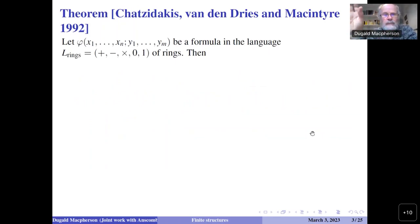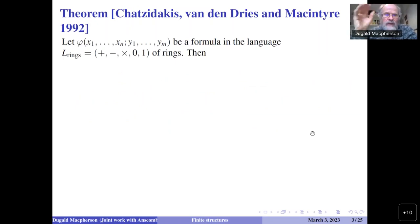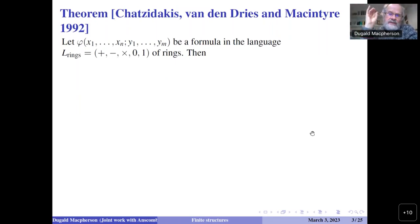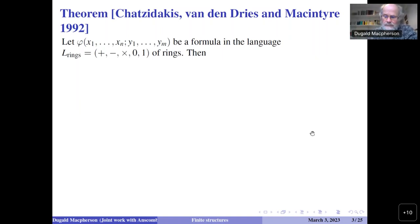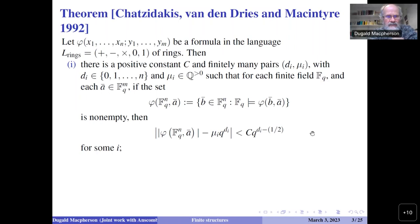The theorem of Chatzidakis, van den Dries, and MacIntyre looks at definable sets in finite fields and their cardinalities. You work in the language of rings — plus, minus, times, zero, one — and take any formula phi, partitioning its variables into x-bar and y-bar. Such a formula in any structure gives a family of definable sets: for any parameters a1 to am for the y-variables, you get a definable set in the x-variables. We're interested in this uniformly across all finite fields.